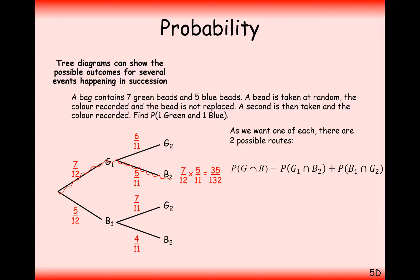Now another way of getting one green and one blue would be to start with the blue bead and then pick the green bead out afterwards. So we'll get a probability of five out of twelve times seven out of eleven. We're effectively timesing the numbers that are along the branches of the direction that we've gone along the tree diagram. So that's thirty-five out of one hundred and thirty-two.